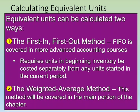When calculating equivalent units, there are a couple of inventory cost flow assumptions that can be used. One is FIFO — first in, first out — or the weighted average method. The weighted average method is typically assumed because it's simpler and the differences between the two methods are usually immaterial. FIFO is reserved for more advanced accounting courses. Going forward, we're going to assume we're using the weighted average method.